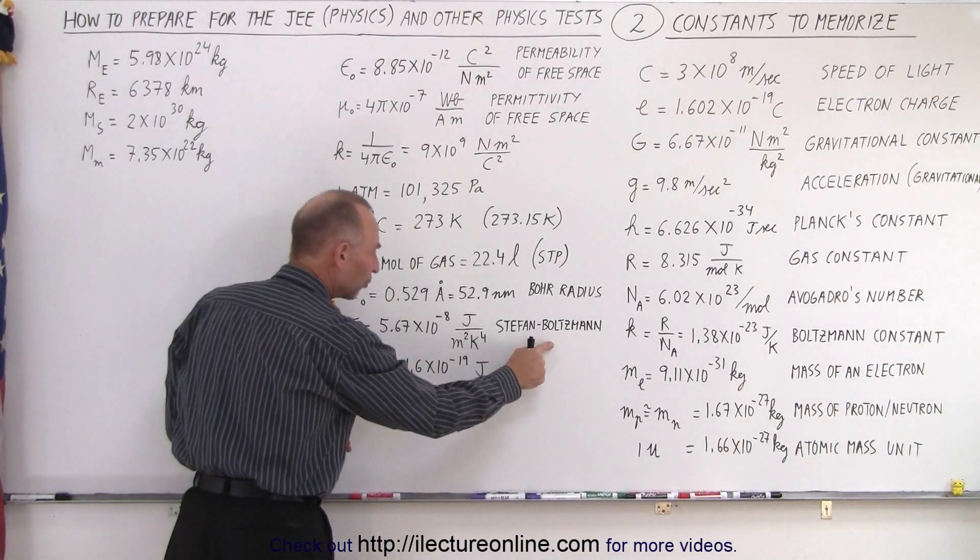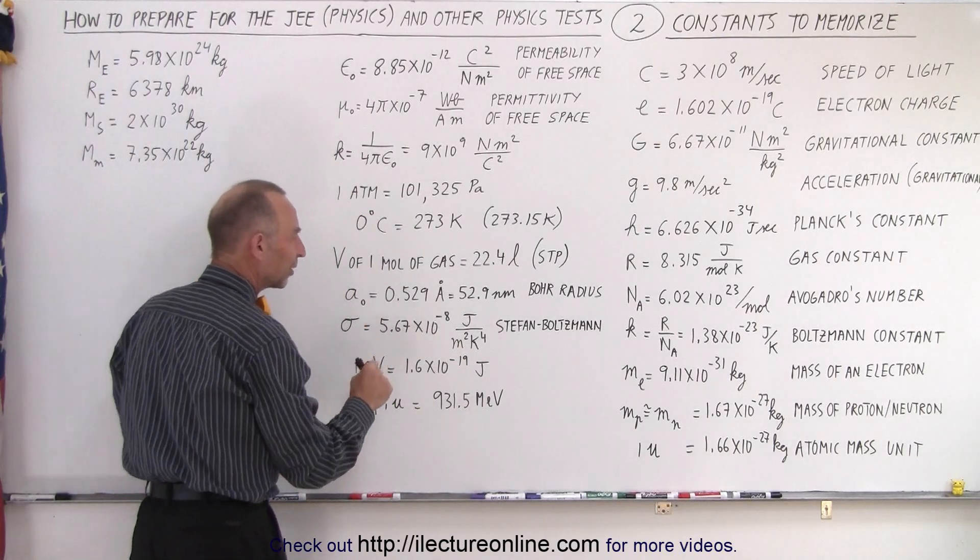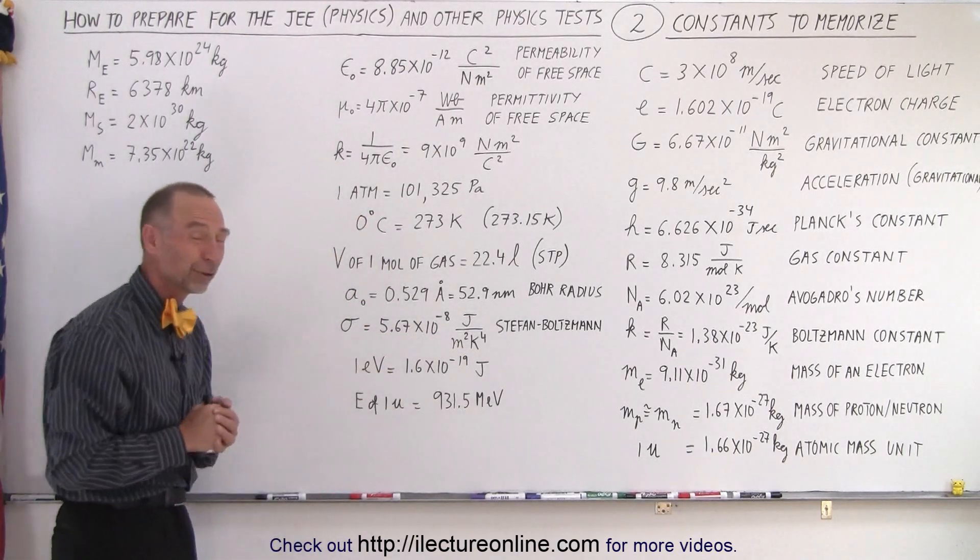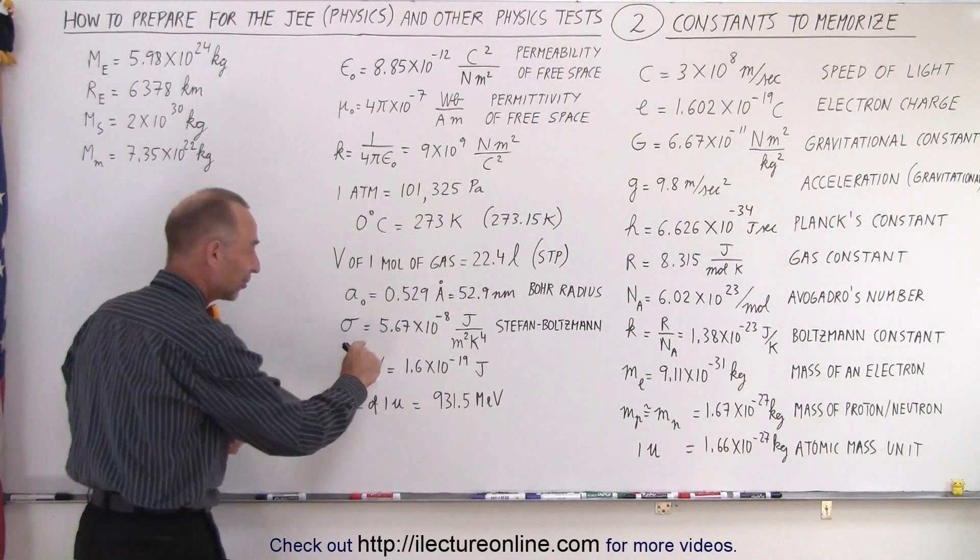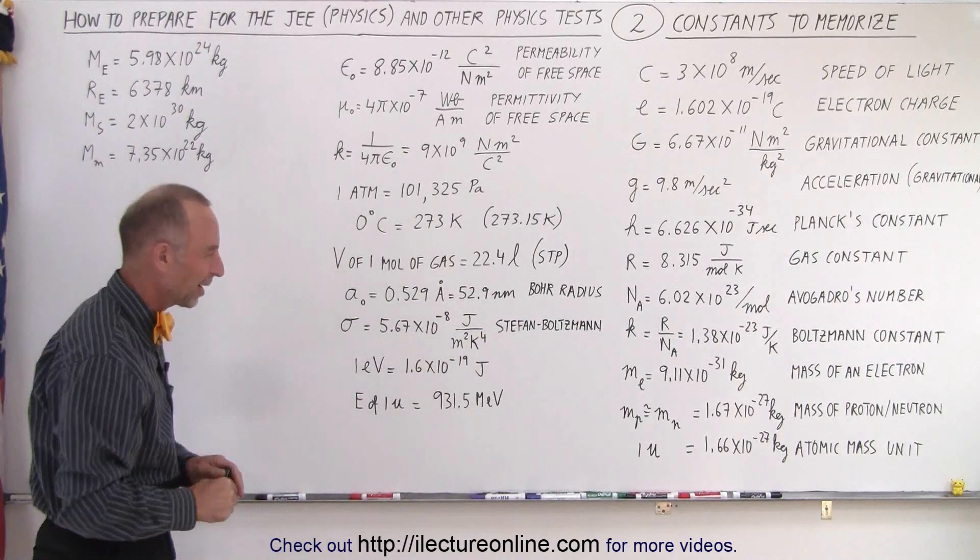Then, we have the Stefan-Boltzmann constant, what we use in radiation. We have 5.67 times 10 to the minus 8 joules per meter squared per kelvin to the fourth power. Turns out, I like this one, because notice the numbers, 5, 6, 7, 8. That's one of the easiest ones to memorize.